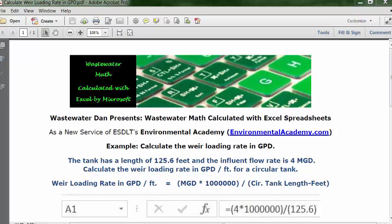Today's problem: the tank has a length of 125.6 feet and the influent flow rate is 4 MGD. Calculate the weir loading rate in GPD per foot for a circular tank.